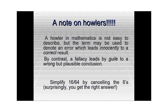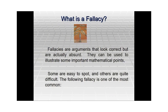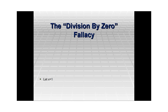By contrast, a fallacy leads by guile to a wrong but plausible conclusion. What that means is that you do something without realizing it — you do some mathematically incorrect step in between your steps and you land into something really weird. That is what is known as a fallacy in mathematics. These are arguments that look correct but are actually absurd, and they can be used to illustrate some important mathematical points. So we begin with the most common fallacy, which is called the division by zero fallacy.